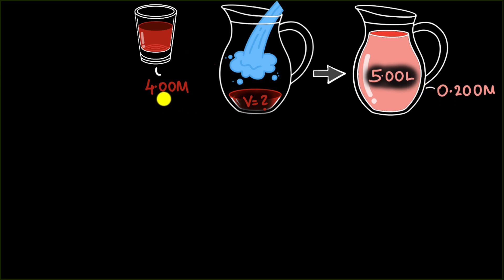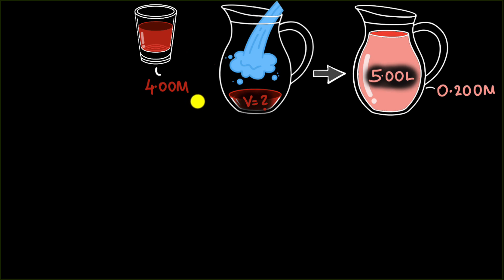By the way, if you're wondering why we have so many zeros and decimals, that's because we have precisely measured this to three significant figures. We take our Kool-Aid very seriously! But again, how do you figure out how much of the concentrated syrup we need?